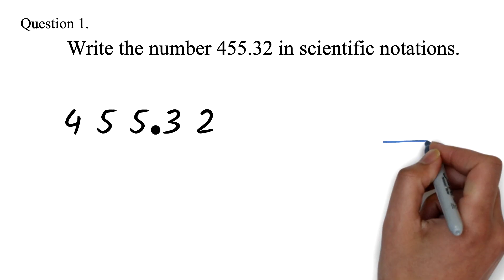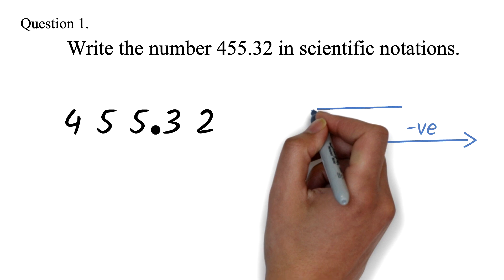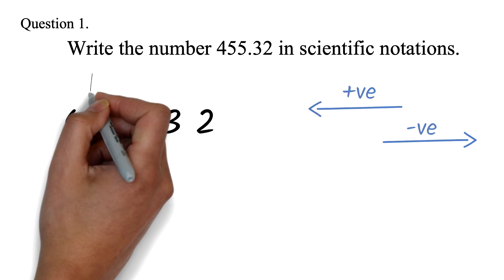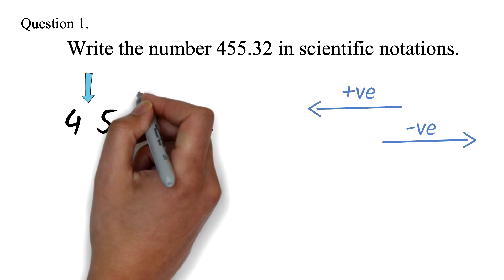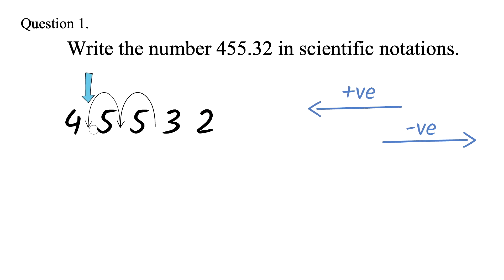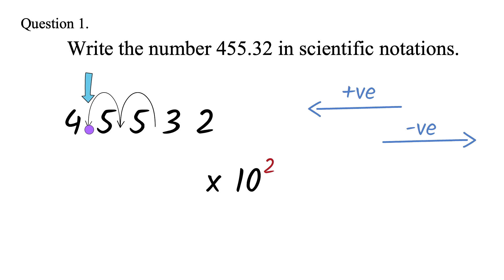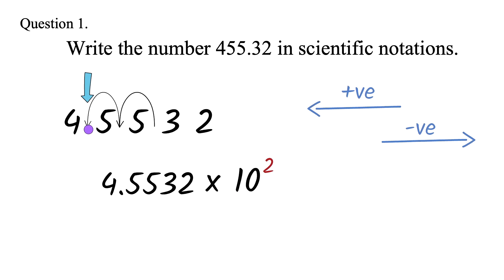If we move to the right, then we have a negative exponent. If we move to the left, then we have a positive exponent. Here, we have to move the decimal behind the 4, since it's the first non-zero number. We start from where the decimal point is and move 1, 2 points to the left. So this will be times 10 to the power positive 2. Our final answer is 4.5532 times 10 to the power 2.